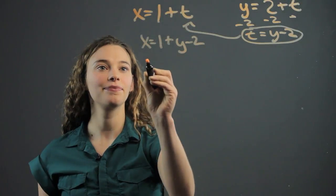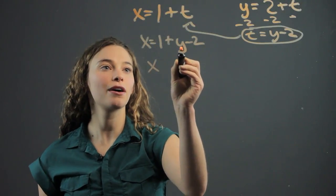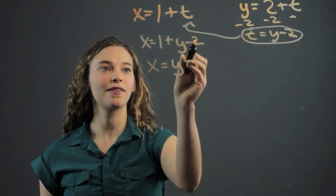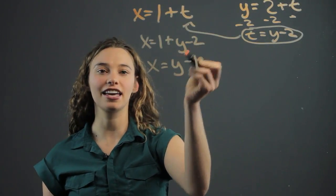Now let's simplify. If x equals 1 plus y minus 2, x equals y minus 1, right? Just adding the 1 and the negative 2.